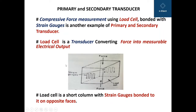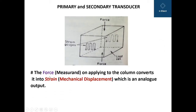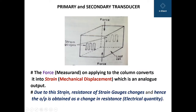We will see how it happens. The load cell is a short column with strain gauges bonded to it on opposite faces. The force applied to the column converts it into strain on the strain gauges. Strain is a mechanical displacement, which is an analog output. Due to this strain, the resistance of the strain gauges changes, and hence the output is obtained as a change in resistance, which is an electrical quantity.